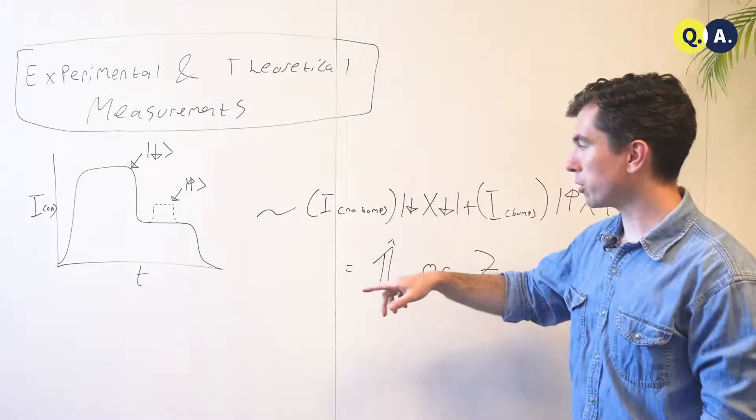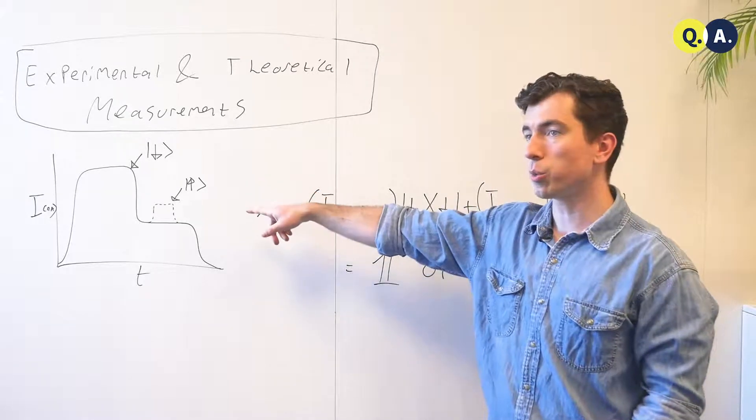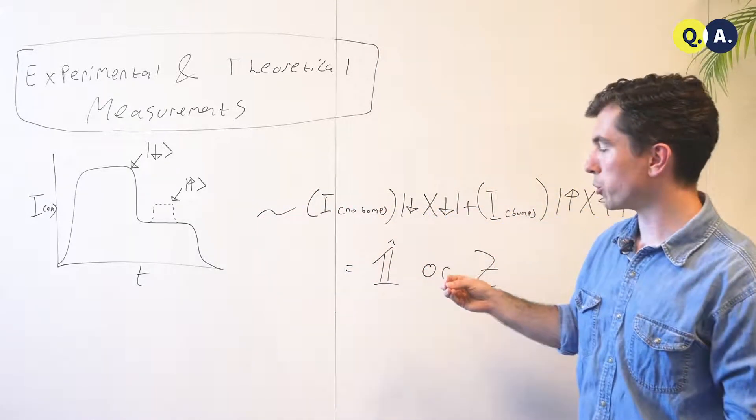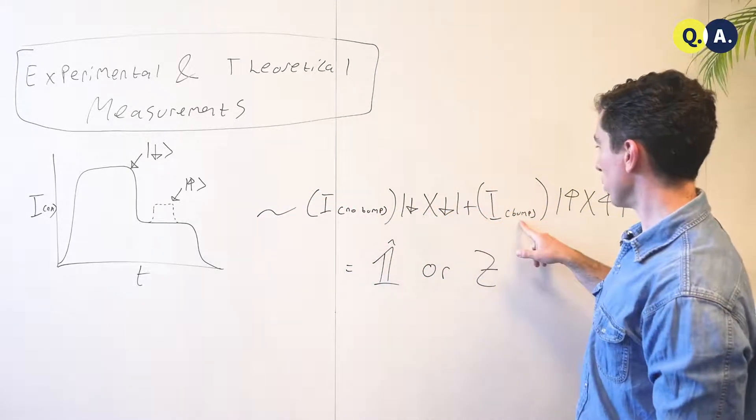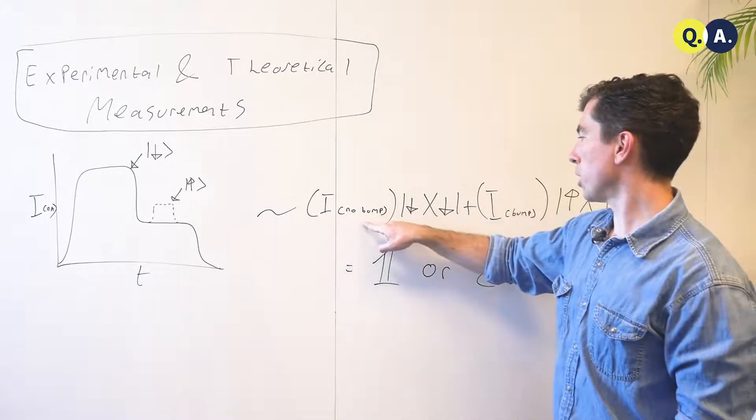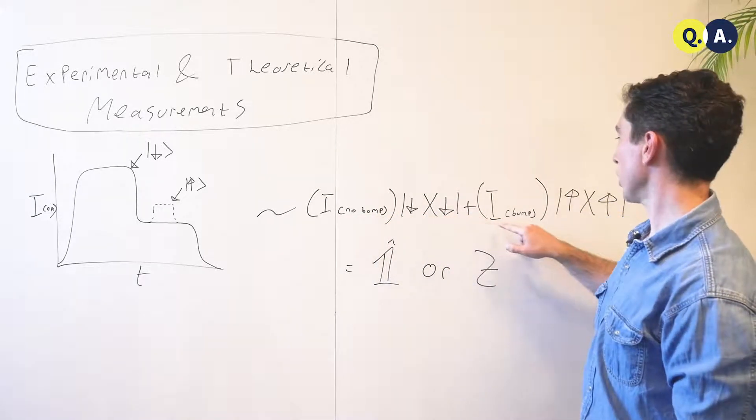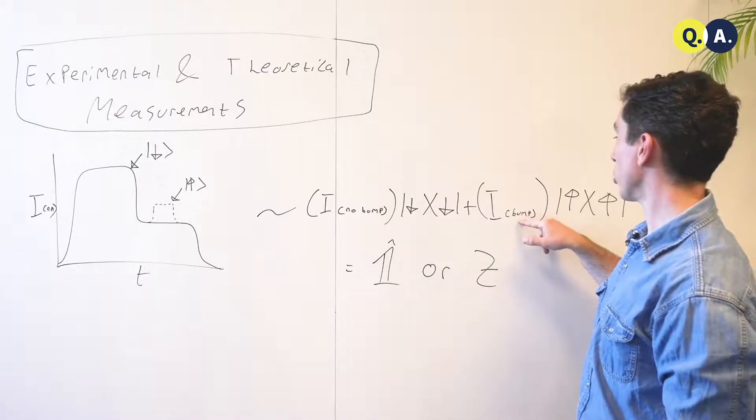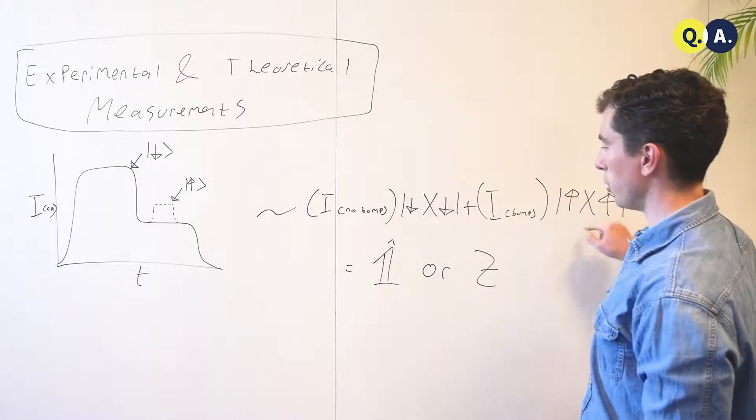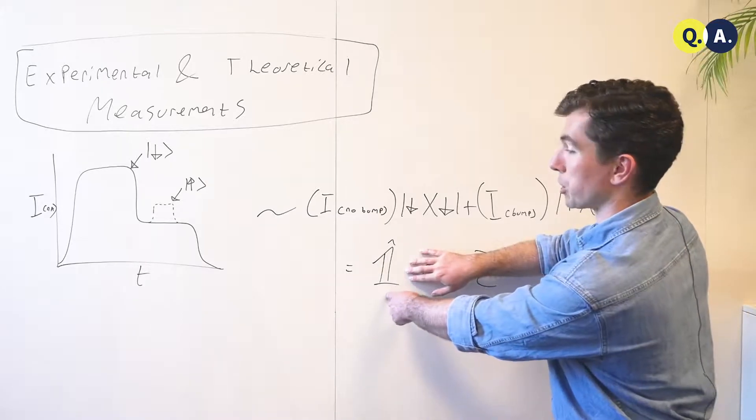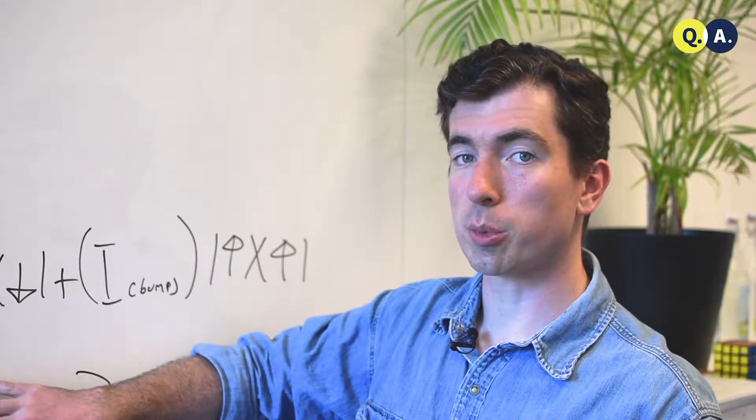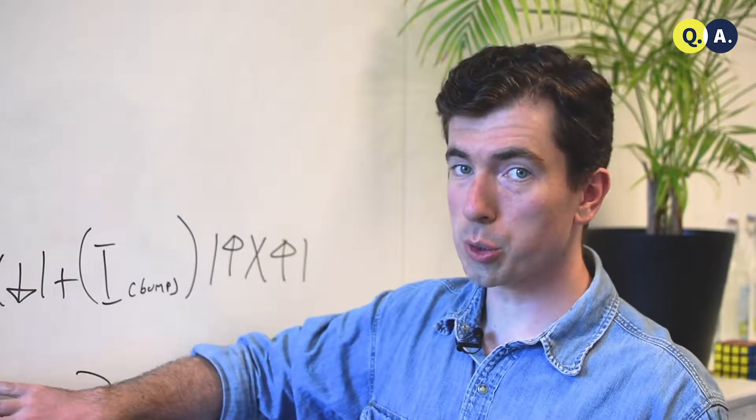Now, the important thing about these two signals being distinguishable, about there being a large difference between them, is that if they're equal, we end up with some number times down down plus some number which is identical times up up. So the measurement operator becomes the identity, which doesn't discern between the up and down states, so it's useless as a measurement.